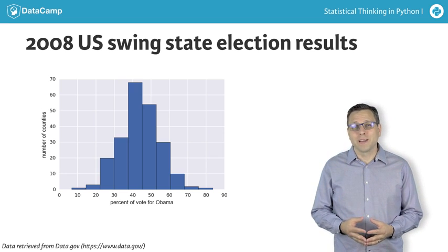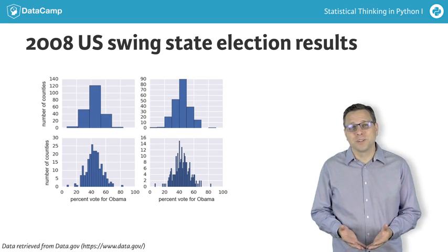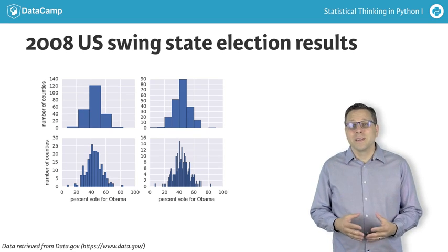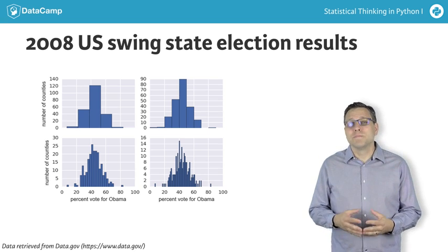However, a major drawback of using histograms is that the same dataset can look different depending on how the bins are chosen. And choice of bins is in many ways arbitrary. This leads to binning bias.